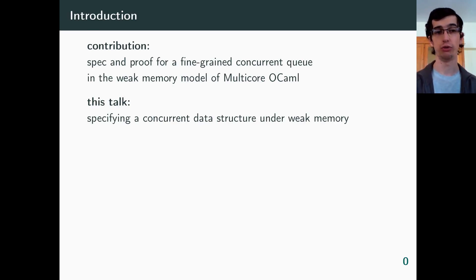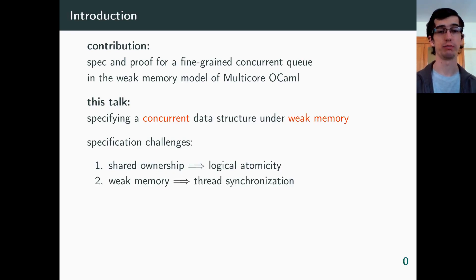Concurrency poses a number of challenges. We want to specify a data structure such that we allow sharing it between two threads, so one challenge is with shared ownership, and as we'll see, solving this involves some form of atomicity. The operations of a concurrent structure must behave as if they were atomic, and it's something we must specify somehow. Another challenge is with weak memory. With weak memory, you need to be explicit about how your threads synchronize. So the spec must expose useful synchronizations, and often fine-grained implementations offer less synchronizations than a lock-based one.